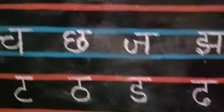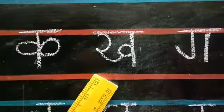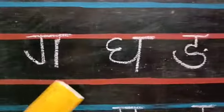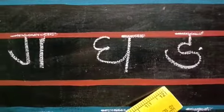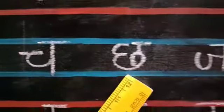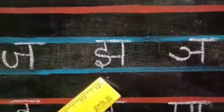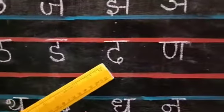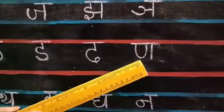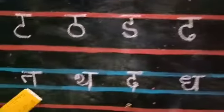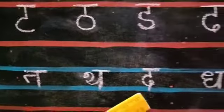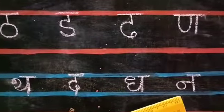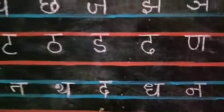Again, look at the board, children. Ka, Kha, Gha, Na. Cha, Cha, Jha, Cha, Nha. Ta, Ta, Da, Dha, Na. Ta, Ta, Da, Dha, Na. Now children,